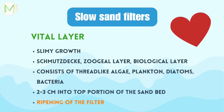In between the supernatant water and the bed of sand, a slimy layer growth is seen. It forms on the surface of the sand bed to approximately 2 to 3 centimeters thickness. This layer is called the vital layer, schmutzdecke, zooglia layer, or the biological layer. It is known as the heart of the slow sand filter and contains thread-like algae, plankton, diatoms and bacteria. It removes organic matter, holds back bacteria, and oxidizes ammoniacal nitrogen into nitrates, helping to purify the water. The formation of the vital layer is known as the ripening of the filter.